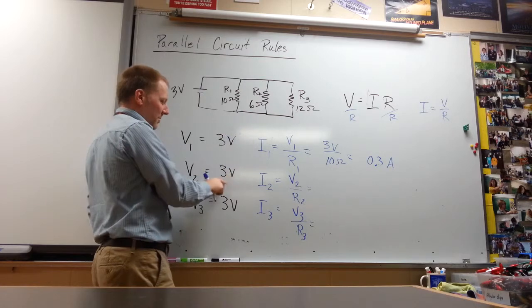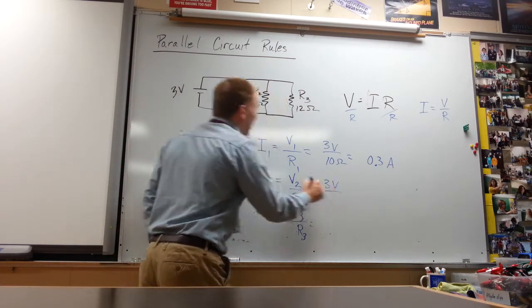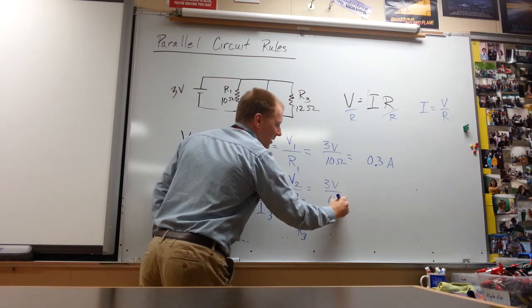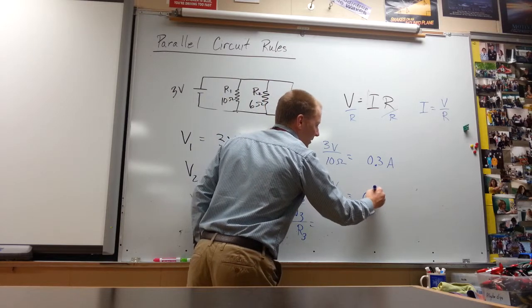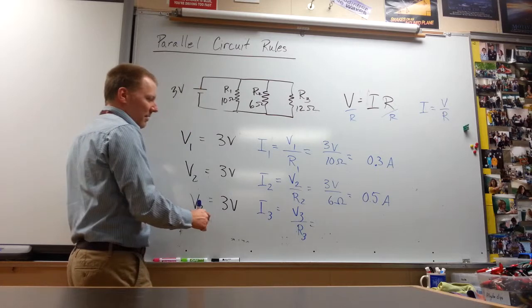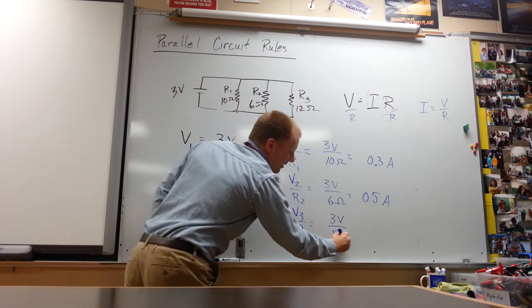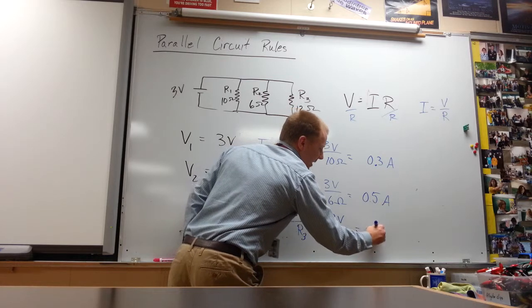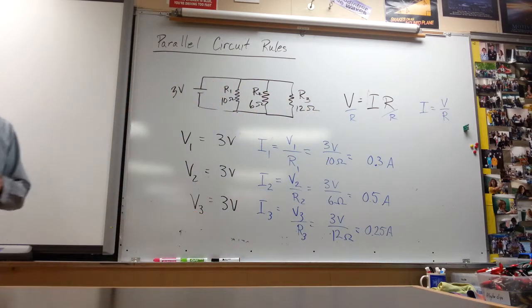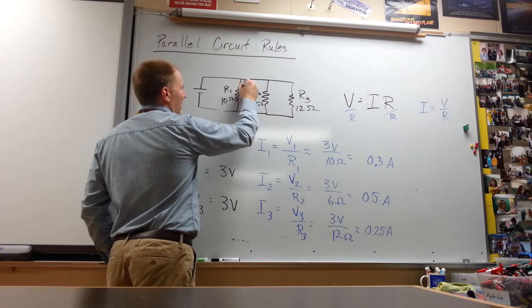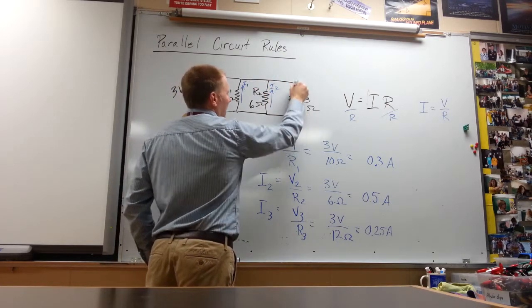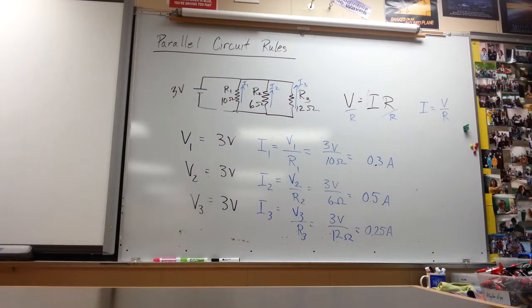I2, the current through branch 2, is going to be the voltage of that one. It's still three volts over the resistance, six ohms. Well, that's one half, so 0.5 amps. Again. Last one, voltage is still three volts. Now it's over 12 ohms. Well, that's a quarter, 0.25 amps. Let me just write that down. So we have found the currents through these: I1, I2, I3.